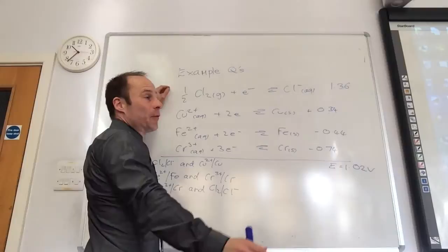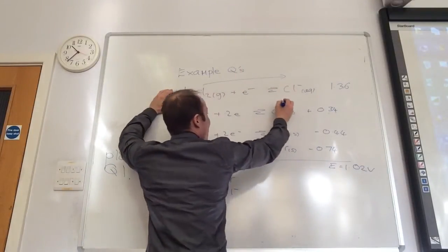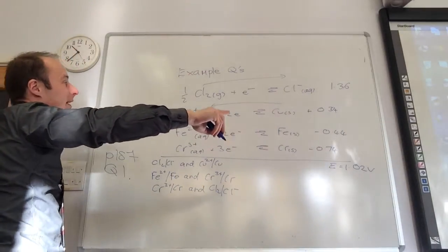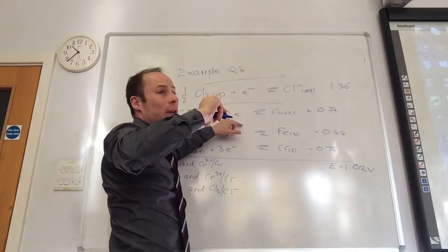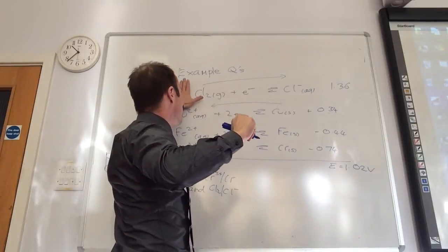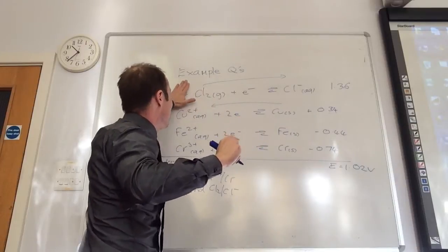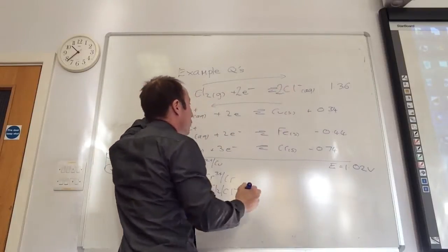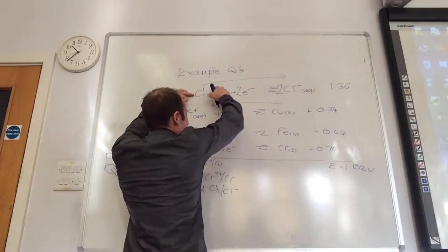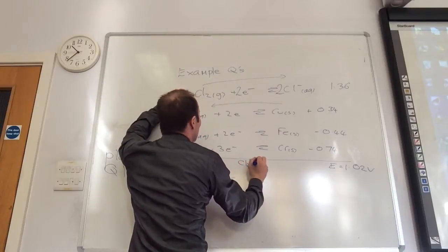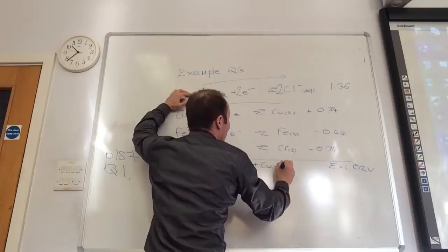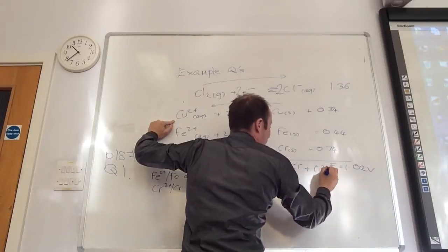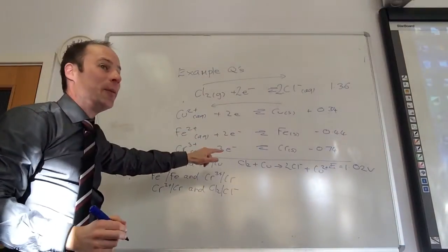The next thing they want me to work out is what reaction will actually take place. The most positive will go from left to right. That one therefore is reversed, but hang on. When I combine these, I've got to make sure that my electrons are the same. So this one has to be times by 2. So that becomes Cl2 plus 2 electrons goes to 2 chloride ions. And then the reaction that will take place would be Cl2 plus copper goes to 2 Cl minus plus copper 2 plus.